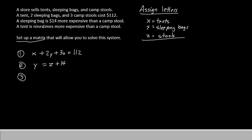Now let's look at the third line. It says a tent is nine times more expensive than a camp stool. So tent is x, is means equals, and nine times a camp stool, we'll say nine times z, or simply 9z. That's all of our equations assigned. Now we need to set up the matrix.